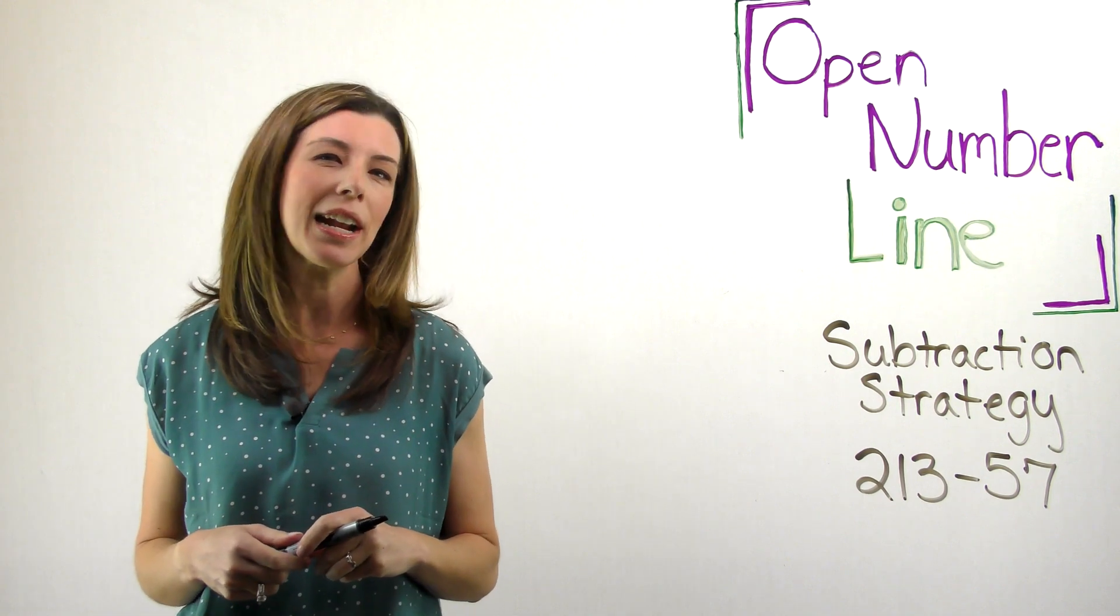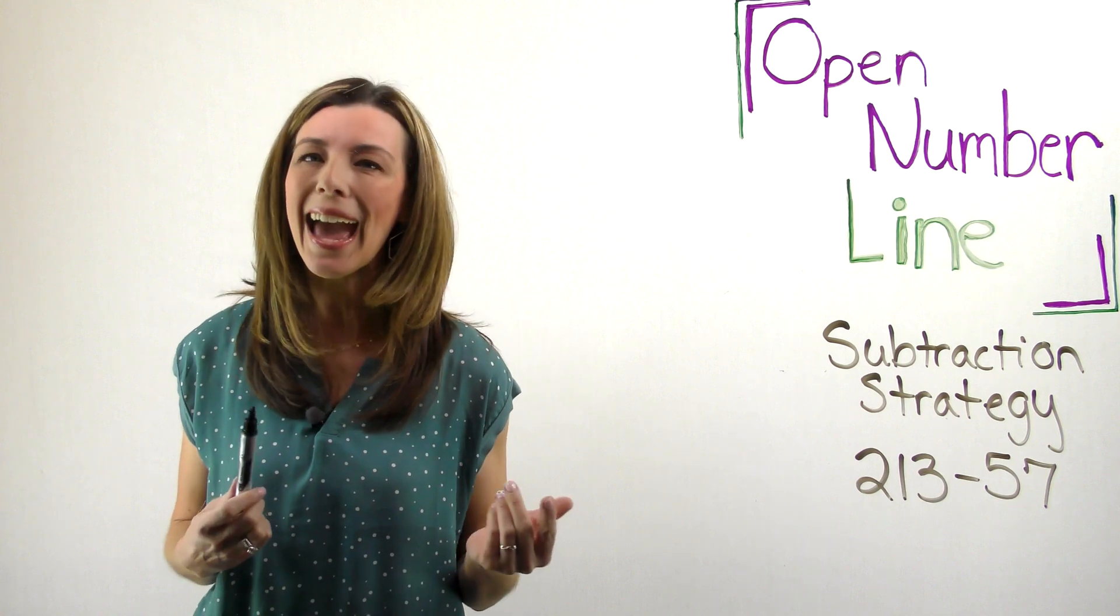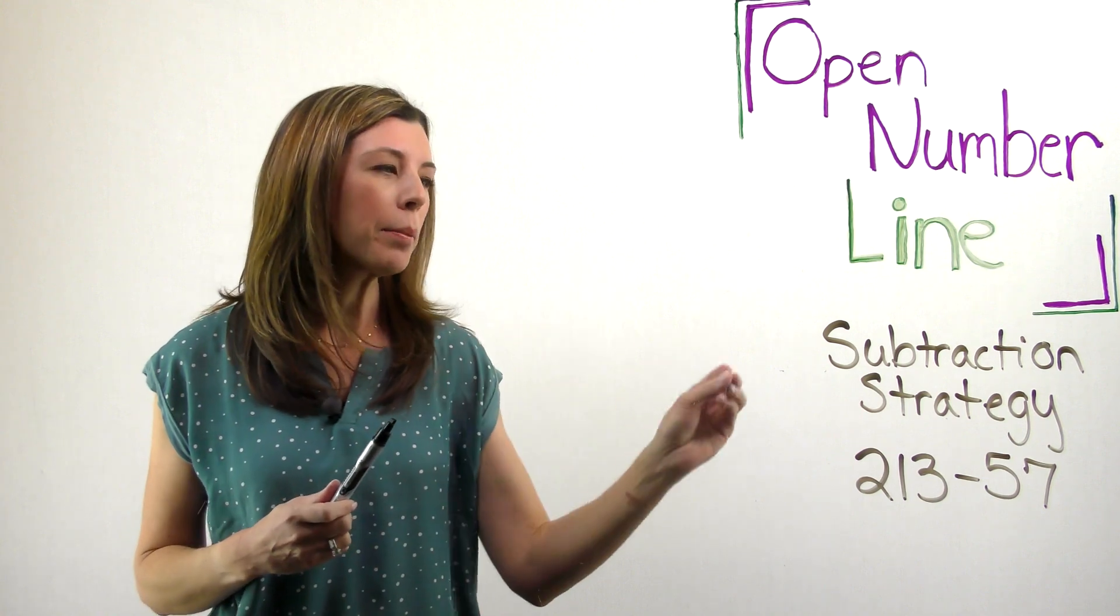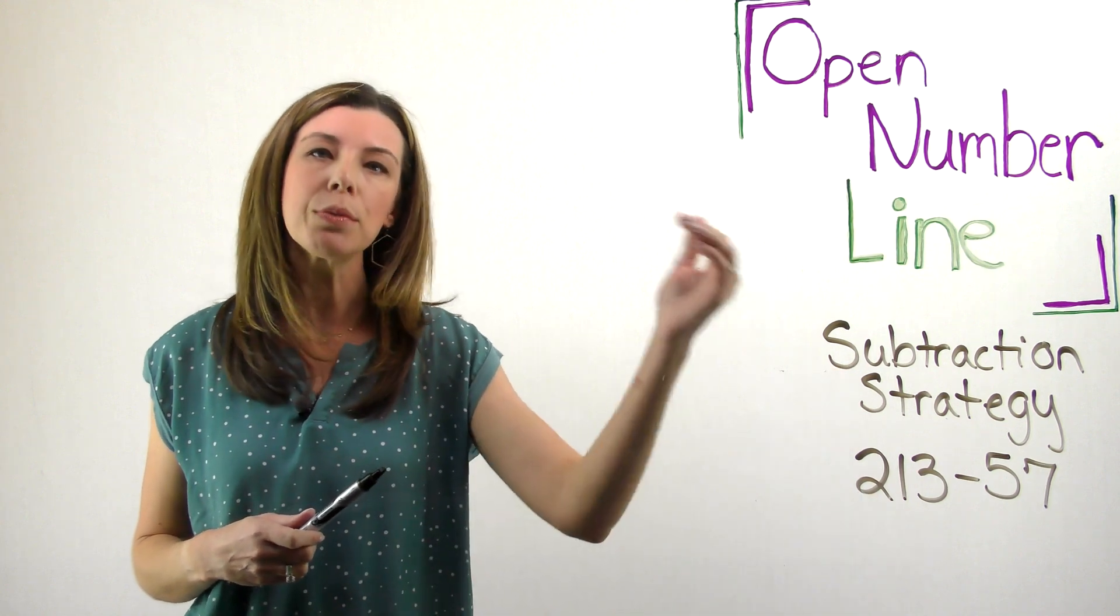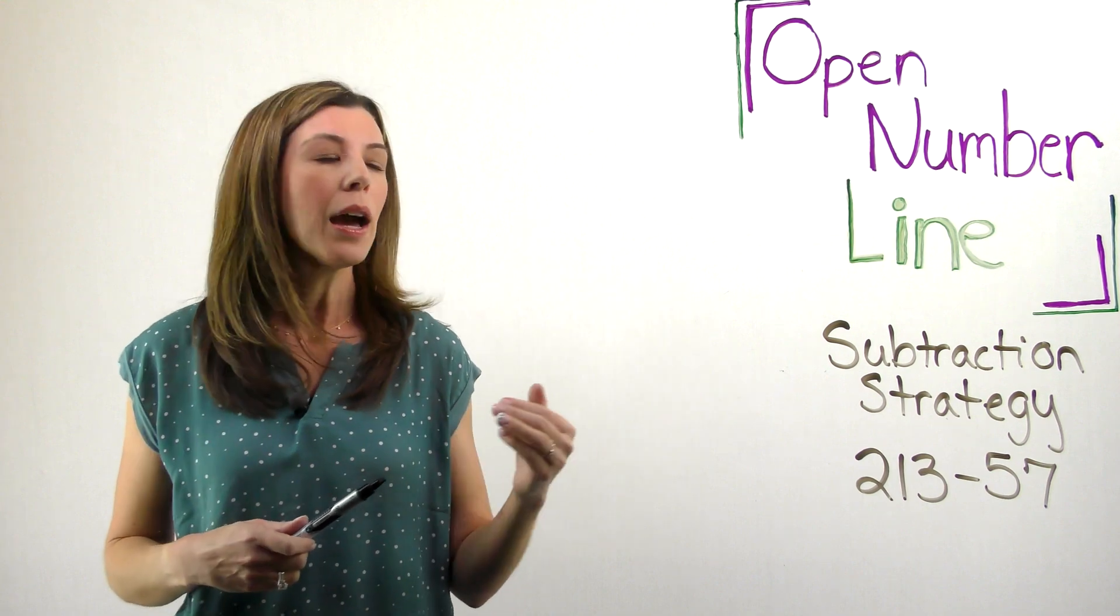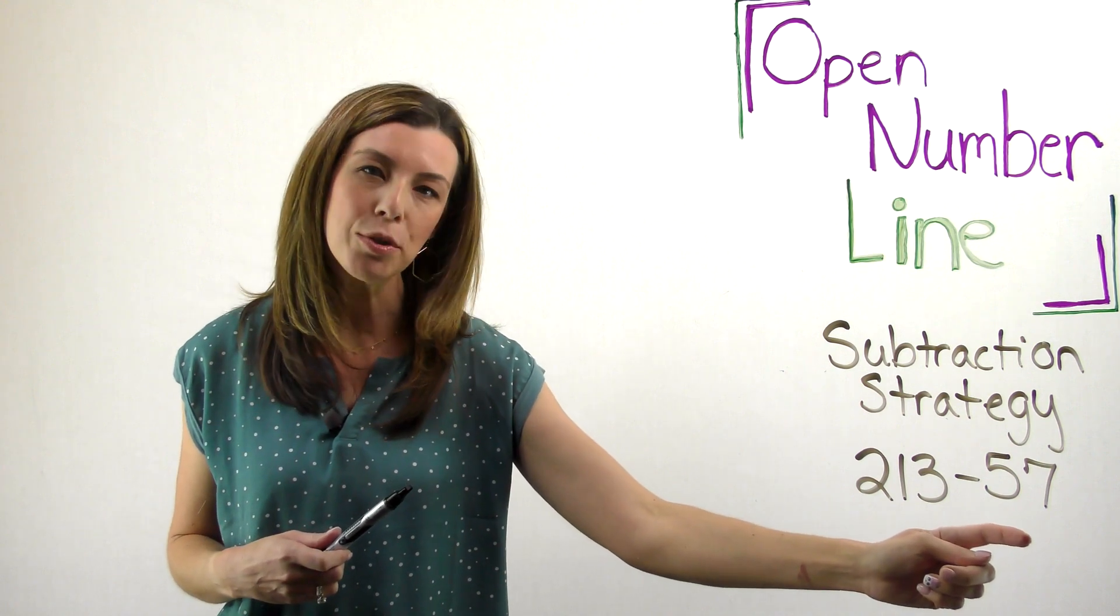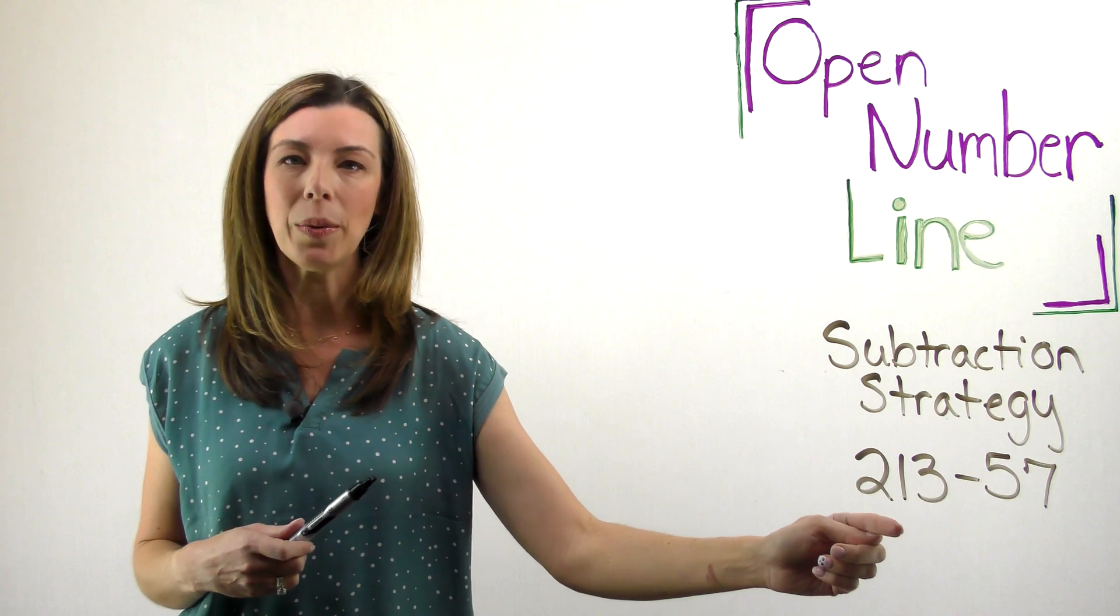Sometimes I'll have students that ask me, so what's the difference between the open number line strategy and the add up strategy? Here's the main difference. In the open number line strategy, notice that I was starting with the minuend and I was subtracting backwards. I was actually subtracting and moving left on the number line. In the add up strategy, I'm starting with the subtrahend and I'm adding up until I get to that minuend.